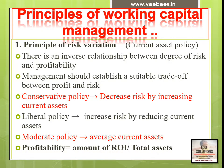The next topic is principles of working capital management. The first principle is the principle of risk variation, also called current asset policy. Here, risk means variation in current assets — that is, the level of current asset maintenance is denoted as risk. There is an inverse relationship between degree of risk and profitability. The level of current assets maintained and the amount of profitability have an inverse relationship.